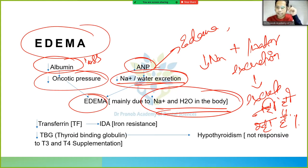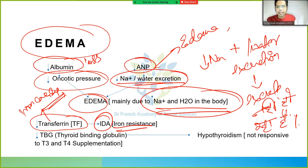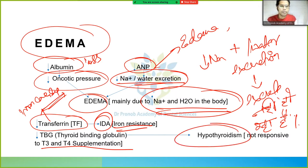Other proteins also decrease. Transferrin, which carries iron, if decreased leads to iron deficiency anemia — this anemia is iron resistant and does not improve with iron supplementation. There is also decreased thyroid binding globulin, which is unresponsive to T3 and T4 supplementation. Normally hypothyroidism is treated with T3/T4, but in this case it does not respond.